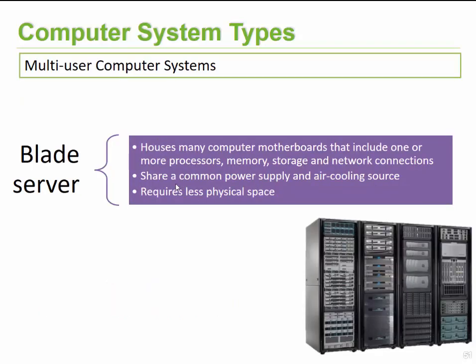Blade servers house many computer motherboards, which might contain one or more processors, storage, memory, and network connections. These are typically referred to as server racks, and inside the server racks you have individual blade servers. Each server might have specific tasks — some reserved for storage, some containing all the processors — and depending on your requirements you would upgrade these accordingly. These devices share a common power supply and air cooling source because they are contained in central server racks.